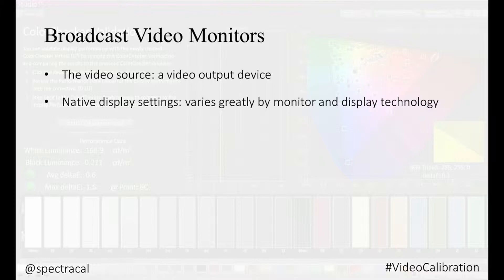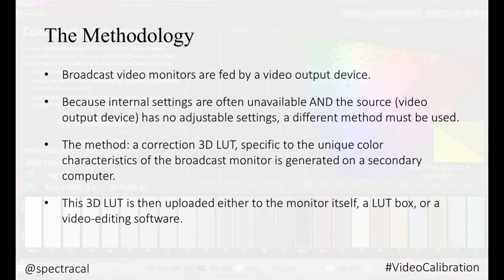Now onto video monitors or broadcast monitors, which commonly have a video output device driving them. The native display performance can vary greatly due to differing display technologies — there are all sorts of displays: OLED, blue-green backlight displays, white LED LCDs. Broadcast video monitors may or may not have internal picture settings available to the user. Because these internal settings are often unavailable and the video output device has no adjustment settings, a different method must be used: a correction matrix, or 3D LUT, specific to the unique color characteristics of the monitor, is generated on a secondary computer.